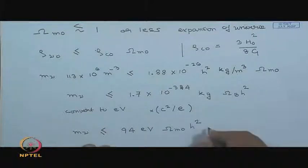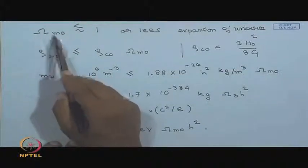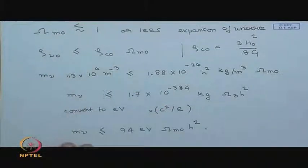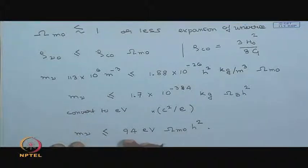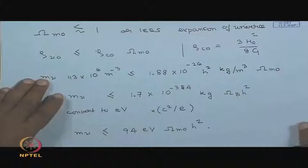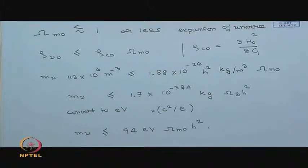This constraint is more meaningful expressed in electron volts. Converting by multiplying by c² and dividing by the electron charge, the limit becomes: the mass of the neutrino should be less than or equal to 94 eV × Ω_matter,0 × h². This is the limit on the neutrino mass from the requirement that the mass density parameter of the universe should be less than or equal to 1. This very interesting idea was first worked out in 1972, and it represents one of the most stringent limits from cosmological observations of the expansion rate of the universe and large scale structure.